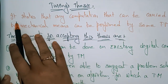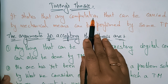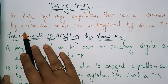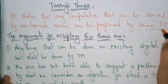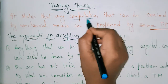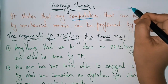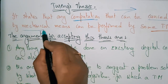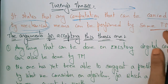The Turing thesis states that any computation that can be carried out by mechanical means can be performed by some Turing machine. So the thesis is saying that whatever calculations you are doing that can be carried out by mechanical means can be performed by some Turing machine.